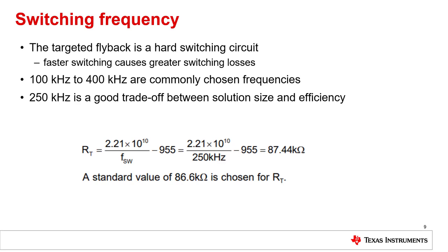Why did we choose 250 kHz switching frequency? LM5155 is a hard switching controller, so higher switching frequency causes more switching losses. Commonly chosen frequencies are somewhere between 100 and 400 kHz — sometimes 1 MHz and above can be seen — but we select a trade-off between solution size and efficiency. The timing resistor for LM5155 is calculated according to this formula, and then a standard value of 86.6 kΩ is chosen.